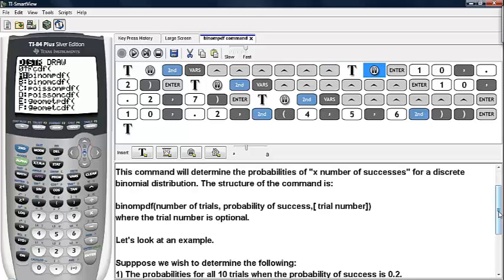This command will determine the probabilities of x number of successes for a discrete binomial distribution. The structure of the command is: binompdf, the number of trials, the probability of success, and a trial number, which is optional.